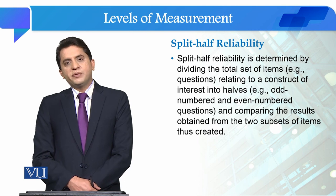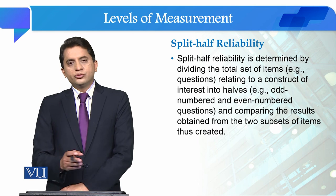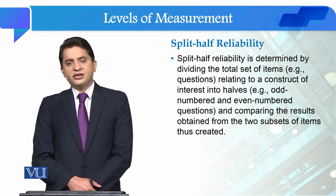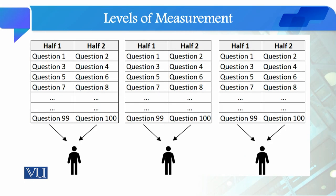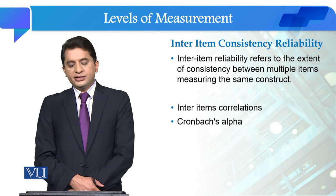What happens in this? We make an assessment tool, and those assessment tool items are divided into two sections. In those sections, you can divide them and take the opinions of the respondents, then see if there is any similarity. For example, if you have 3 respondents, they are split into half-1 and half-2.